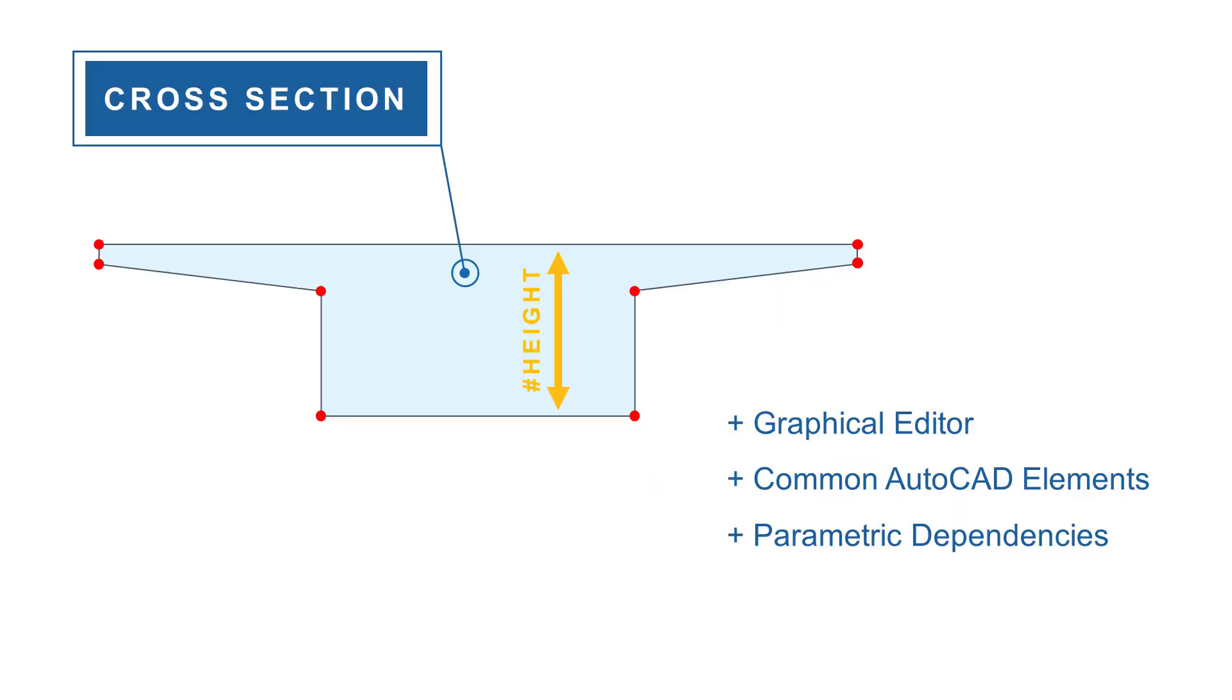Having the axis and the placements set, we can look into the third step, the cross-section definition and variables. Here is where the SOFiSTiK cross-section editor for AutoCAD comes in.